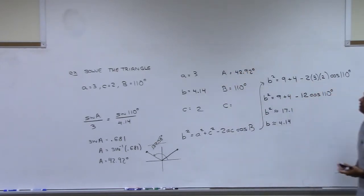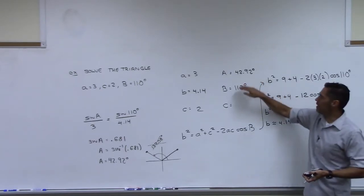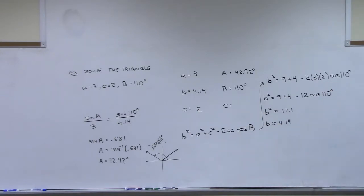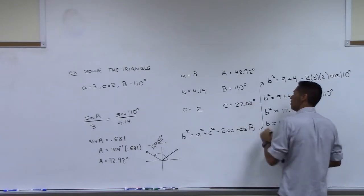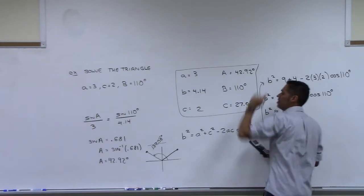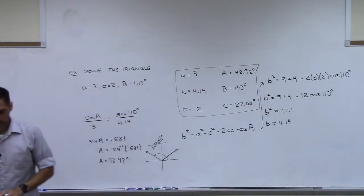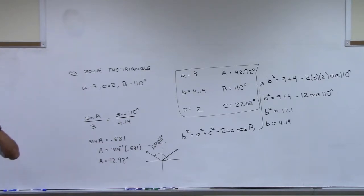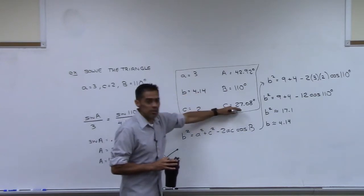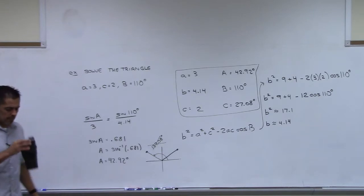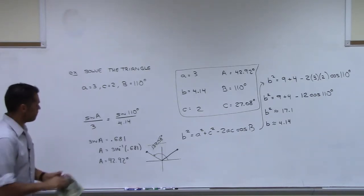Once we have that, we don't need to do any more law of sines or cosines, because these three angles have to add up to 180. So we just put them together and get 27.08 degrees. We have solved the triangle. What was that thing I said you should do once you solve the triangle to verify? Check the sides and angles — biggest angle should go with biggest side, smallest angle with smallest side. And it looks good.